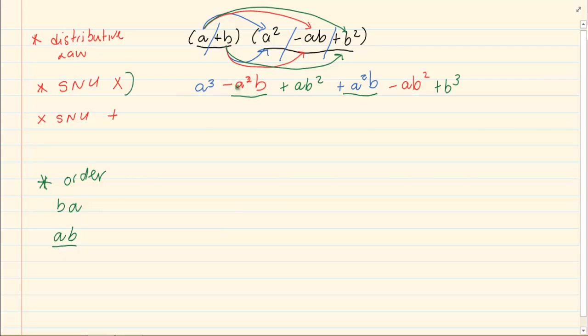Now, if I have got minus 1 a squared b plus a squared b, it means I have nothing, zero. I borrowed 1 rand, I paid 1 rand. If I have got 1 ab squared minus 1 ab squared, it is also zero. So, your final answer is a to the power 3 plus b to the power 3.